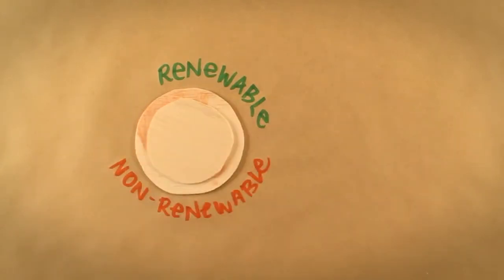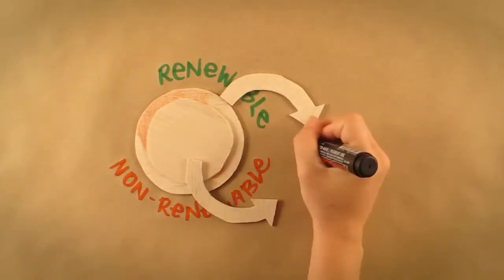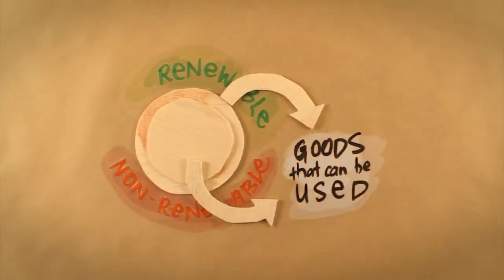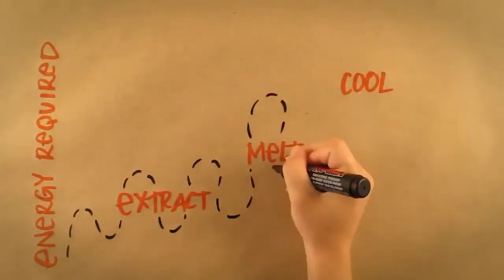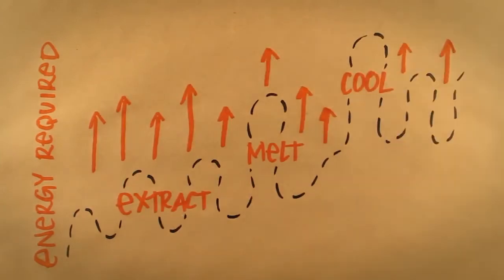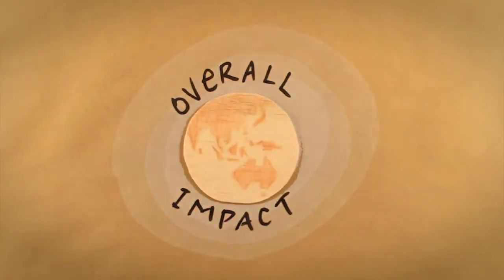Once the raw material has been extracted from the earth's crust, or harvested from the surface, they are processed into goods that can be used. For some natural resources, the amount of energy required to extract, melt and cool the material is significant, and so must be considered when looking at the overall impact of that material in terms of environmental sustainability.